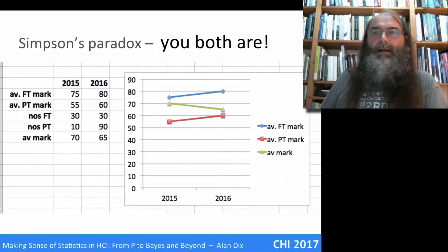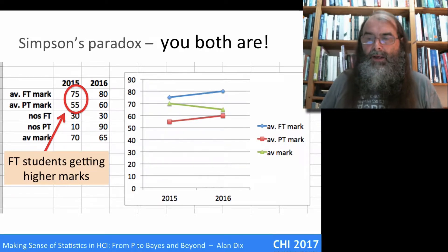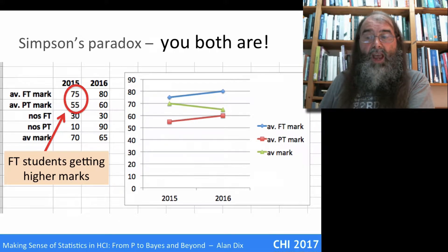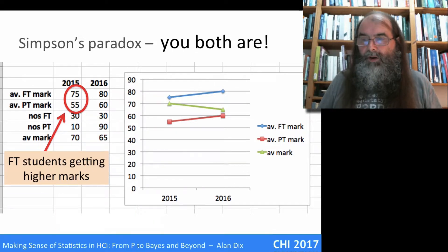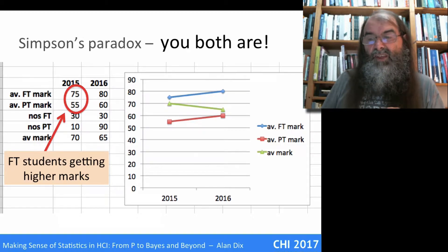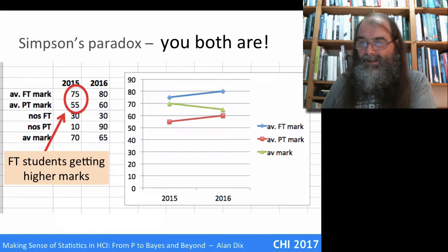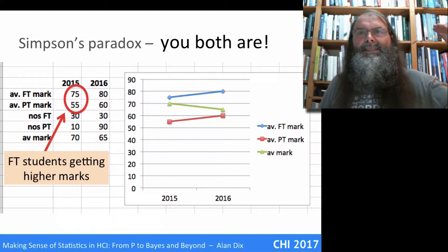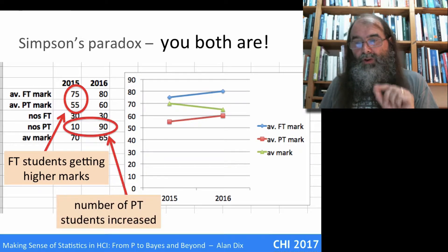You find your full-time students are getting better year on year, and your part-time students are getting better year on year. Then you get a letter from the rector saying your students seem to be getting worse — you measured them going up, the university says they're going down. Which one is right? In fact, you might both be right. Full-time students scored 75 in 2015 and 80 in 2016 — the blue line going up. The overall average mark at the bottom goes from 70 down to 65 — that's the green line.